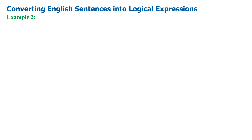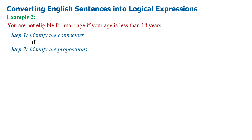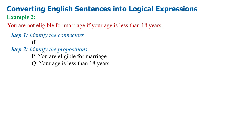Example 2: You are not eligible for marriage if your age is less than 18 years. Step 1 — identify the connectors: IF is the connector in the given statement. Step 2 — identify the propositions: Proposition P is 'you are eligible for marriage'; Proposition Q is 'your age is less than 18 years'.